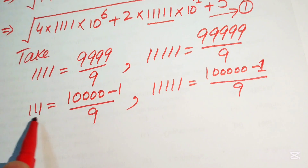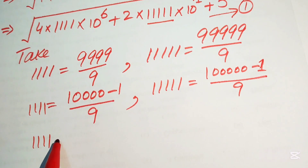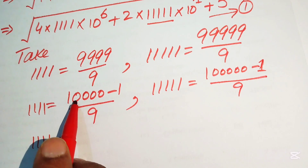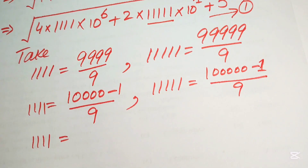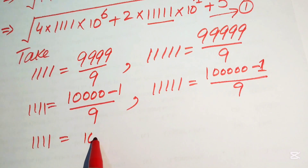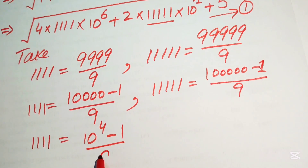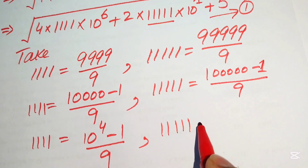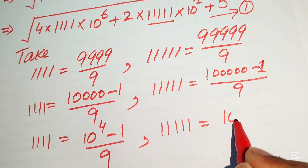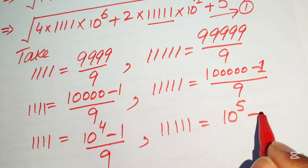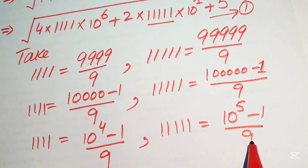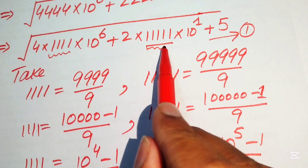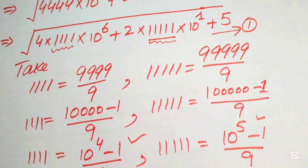We write the 4-ones repunit 1111 as (10 raised to power 4 − 1) divided by 9, and the 5-ones repunit 11111 as (10 raised to power 5 − 1) divided by 9. We then replace these values in the expression.